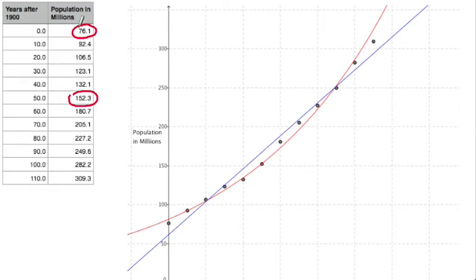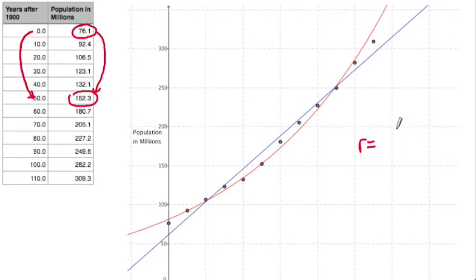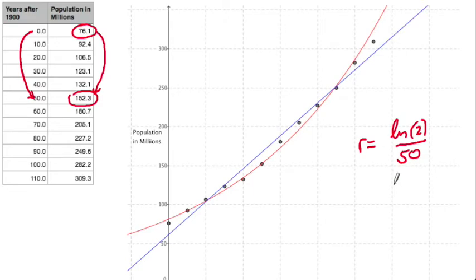So this is the doubling factor — the population doubled from 76.1 to 152.3, and the number of years it took was 50 years. So the growth rate — percent per year — will be ln(2) divided by 50, which gives 0.01386. About 1.4% per year growth in the United States from 1900 to 1950.